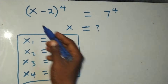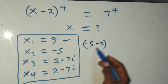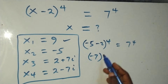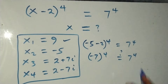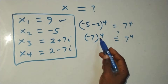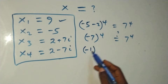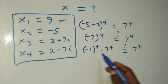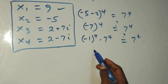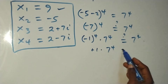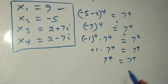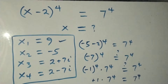For x equals minus 5, substituting gives (minus 5 minus 2) to the power 4 equals 7 to the power 4, which is (minus 7) to the power 4 equals 7 to the power 4. We can write this as (minus 1) to the power 4 times 7 to the power 4 equals 7 to the power 4. Since minus 1 raised to an even power gives plus 1, we have 1 times 7 to the power 4 equals 7 to the power 4. Left hand side equals right hand side, so x equals minus 5 also satisfies the equation.